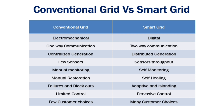Conventional grid has few sensors whereas smart grid has sensors throughout the system. In conventional grid, parameters are manually monitored, whereas in smart grid the parameters are self-monitored. Conventional grid requires manual restoration, but smart grids are self-healing. Conventional grid may lead to failures and blackouts, whereas smart grids are adaptive and capable of islanding. Conventional grids have limited control, but smart grids have pervasive control.